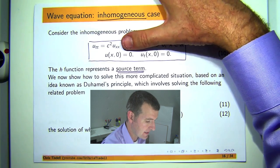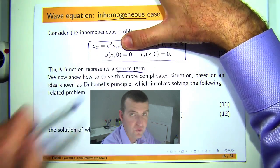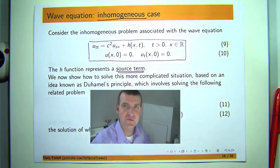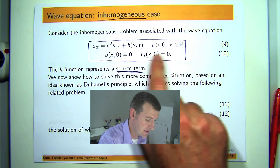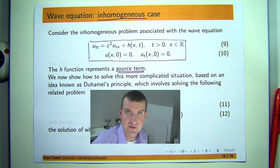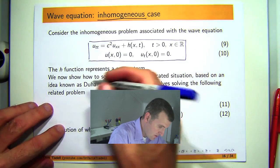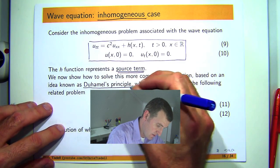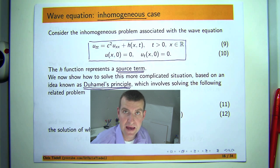Now, if I cover up the H and I have zero conditions here and here, the only solution to this problem is zero. But if I have this H source term, then actually the string will vibrate even though these conditions are zero. So this is more complicated than the homogeneous case when H is zero. And the idea that I'm going to talk about is known as Duhamel's Principle.